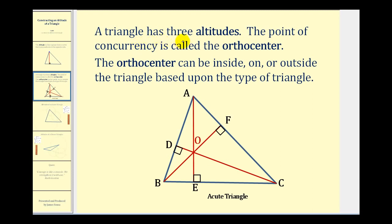Each triangle has three altitudes from each vertex, and the point of concurrency is called the orthocenter. Here, point O is the point of intersection of the three altitudes, and this is called the orthocenter.